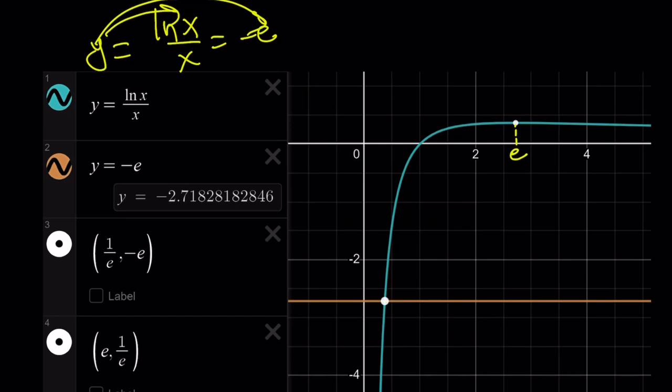Y equals negative e is a horizontal line that is below the x-axis. Right here is the intersection point, and that happens to be 1 over e. And that is the only solution because our function is increasing on that interval. So, there's only one intersection point, and that is the only solution, and the solution is x equals 1 over e.